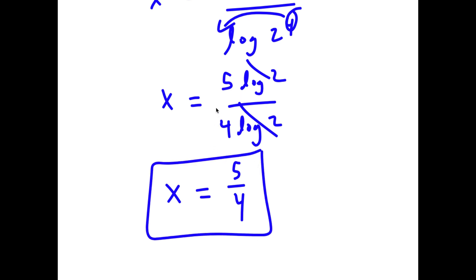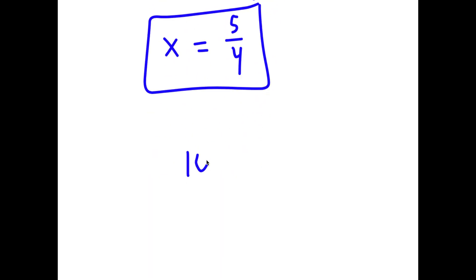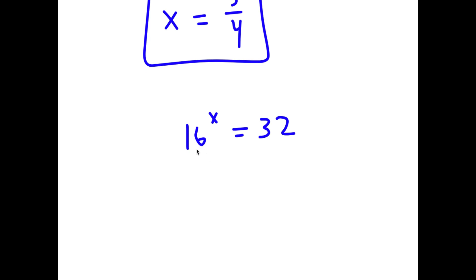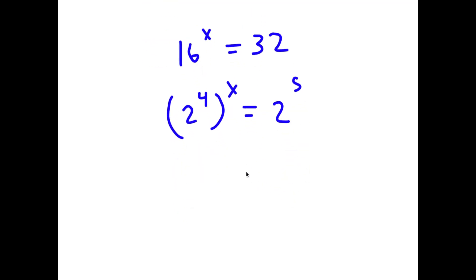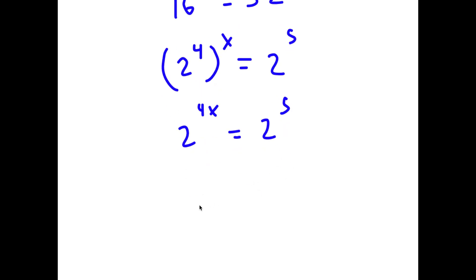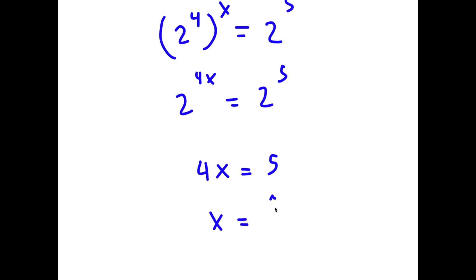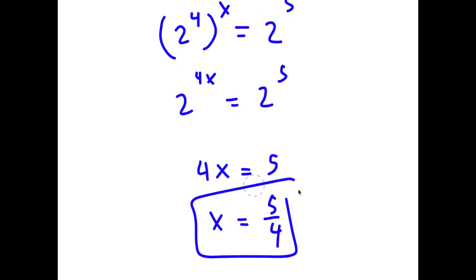For my second method, I have 16 to the power of x equals 32. This time I'm going to rewrite 16 as 2 to the power of 4, so I have 2 to the power of 4 to the power of x equals 32, which I rewrite as 2 to the power of 5. This gives 2 to the power of 4x equals 2 to the power of 5, meaning 4x equals 5 and x equals 5 over 4.